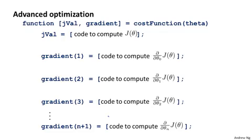Let's talk about how to get regularized linear regression to work using the more advanced optimization methods. And just to remind you, for those methods, what we needed to do was to define a function called the cost function that takes as input the parameter vector theta. And once again, in the equations we've been writing here, we use zero index vectors, so we had theta zero up to theta n.